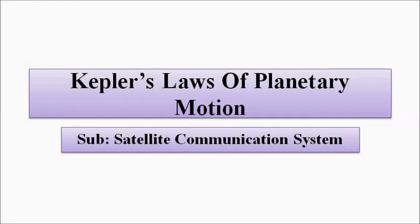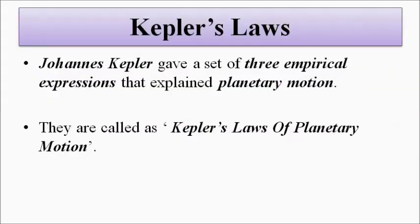This is Kepler's laws of planetary motion. There are three laws — first, second, and third law — and they form the foundation, the basis of the study of satellites. Johannes Kepler gave a set of three empirical expressions which explain planetary motion, the movement of planets around the sun. These three laws combined together are called Kepler's laws of planetary motion.